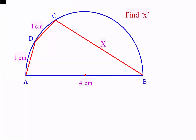In this question we are given a semicircle with diameter AB which is 4 cm. Using AB as one of the sides, a cyclic quadrilateral is drawn with sides 1 cm, 1 cm, and the fourth side is not given to us. Using this data we have to find the length of the fourth side.